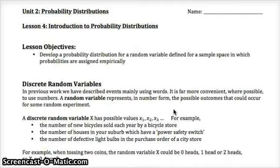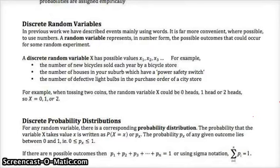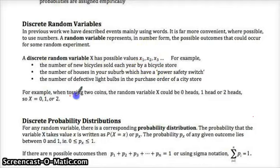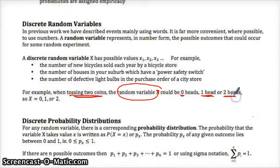So if you were tossing a coin — probably the example that's going to make most sense to you — we would have a discrete random variable x, and we would have possible values x₁, x₂, x₃. If you toss two coins, our random variable x could be zero if you were counting how many times you get a head. So we have zero heads and two tails, or one head and one tail, or two heads.